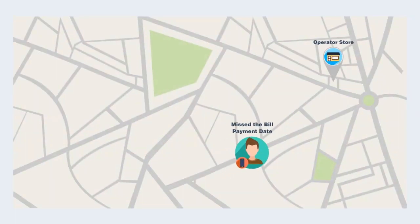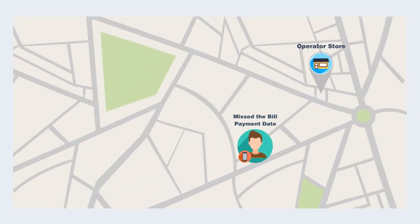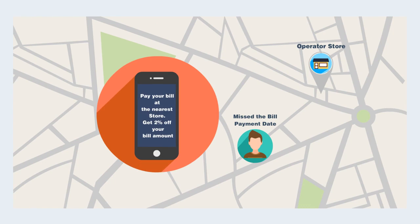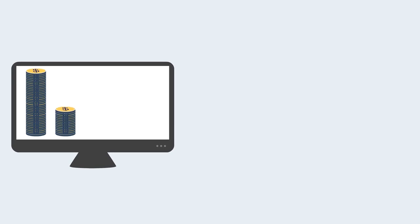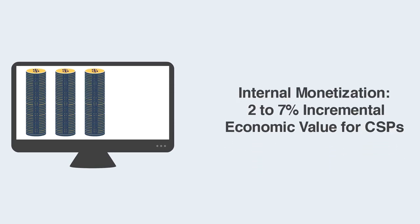Subscribers who have delayed their bill payment will receive a timely contextual reminder when they are in the vicinity of an operator retailer store. Such internal monetization use cases can potentially generate more than 2–7 percent incremental economic value for them.